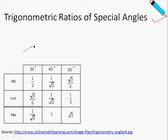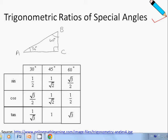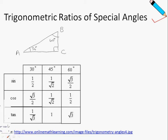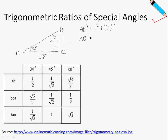I'll start by proving the 30 and 60 degree angle triangle. Suppose I have this right angle triangle, with this angle being 30 degrees and this angle being 60 degrees. Let's call this triangle ABC. I'll let BC be 1 and AC be root 3. Using Pythagoras theorem, AB squared equals 1 squared plus root 3 squared, so AB equals 2.